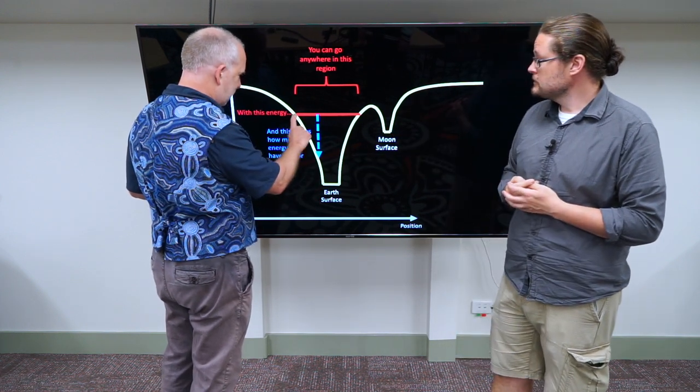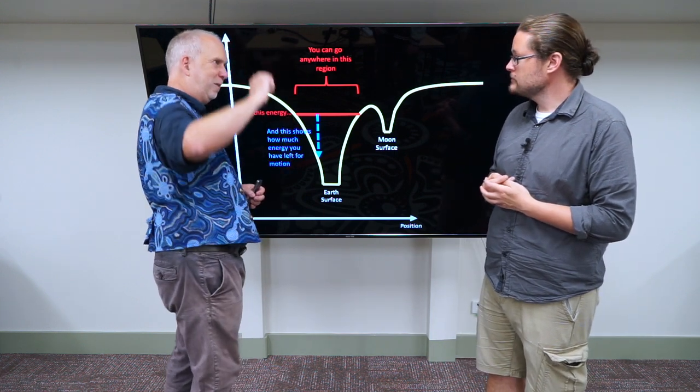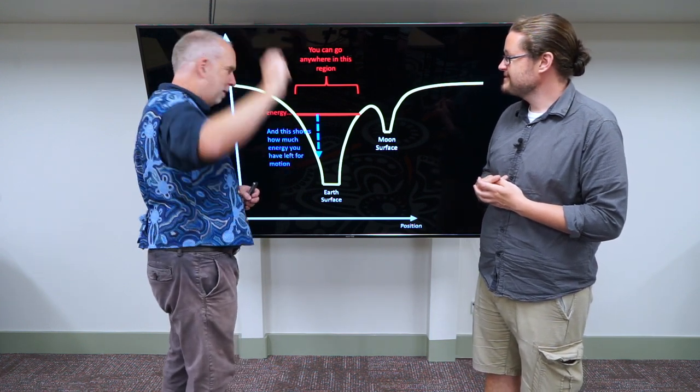If we get to this level, the potential energy is equal to our total energy, so you're not going to be moving. That's right. It's like throwing a ball up. That would be the top of its arc, and then it would come back down again.